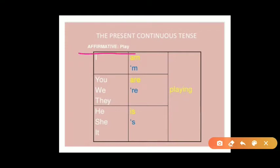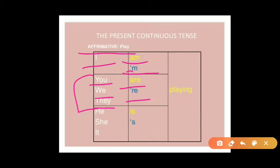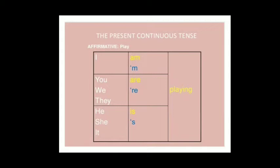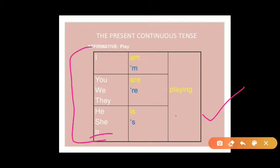Let's see affirmative examples using the verb 'play'. With 'I' you write 'am' — 'I am playing.' With plural subjects 'you', 'we', 'they' you use 'are' — 'You are playing', 'We are playing', 'They are playing.' With singular subjects 'he', 'she', 'it' you use 'is' — 'He is playing', 'She is playing', 'It is playing.' This shows how to use the helping verb according to the subject.